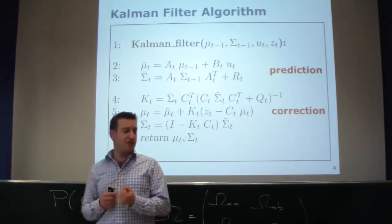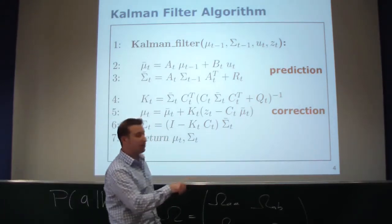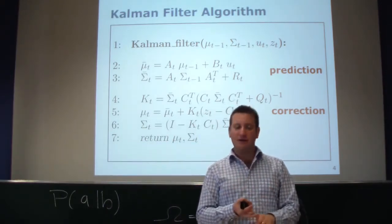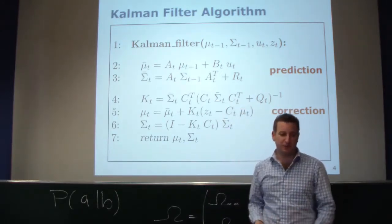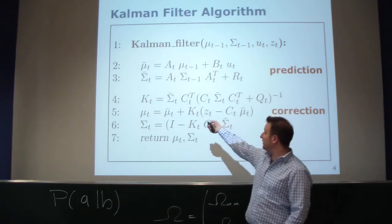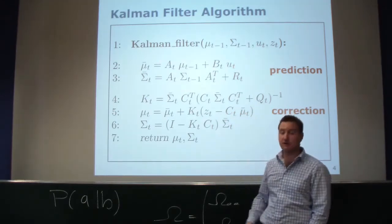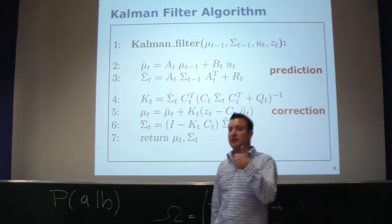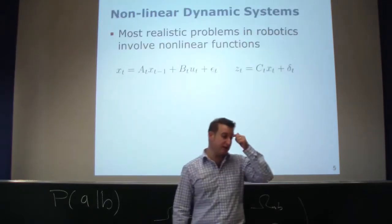If you look at the very basic Kalman filter algorithm, most of those filters work in this way: we have the prediction step and the correction step. If you operate in the moment form, using the mean and covariance matrix, then the prediction step is typically easy to compute and the update step is more difficult. This was the pure vanilla Kalman filter, assuming linear transformation for the motion update and linear update for the measurement function, which is not the case in reality.